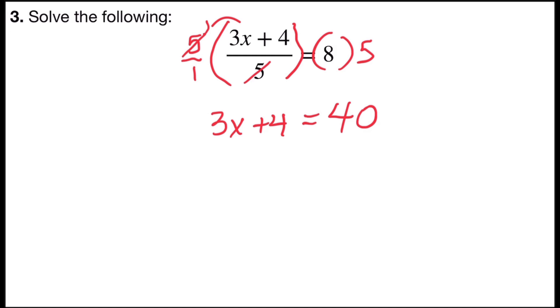And now I have two steps left to solve the equation. I'm going to subtract 4 from both sides in order to isolate the 3x term. So the opposite of 4 is negative 4. 4 minus 4 is 0. 0 plus 3x is 3x. On the right side, 40 minus 4 is 36.